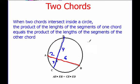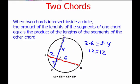If I do my multiplying — 2 times 6, and 3 times 4 — I get 12 on both sides of my equal sign. So what we're saying is if our two chords intersect somewhere in the circle, the segments that they're split into, the products of those segments will be equal.